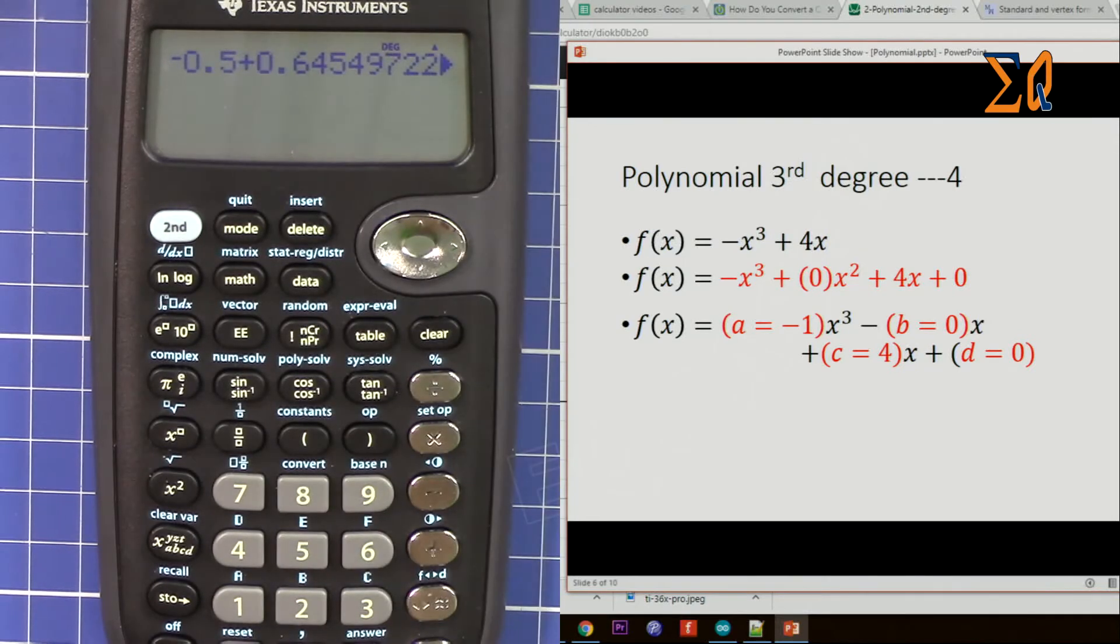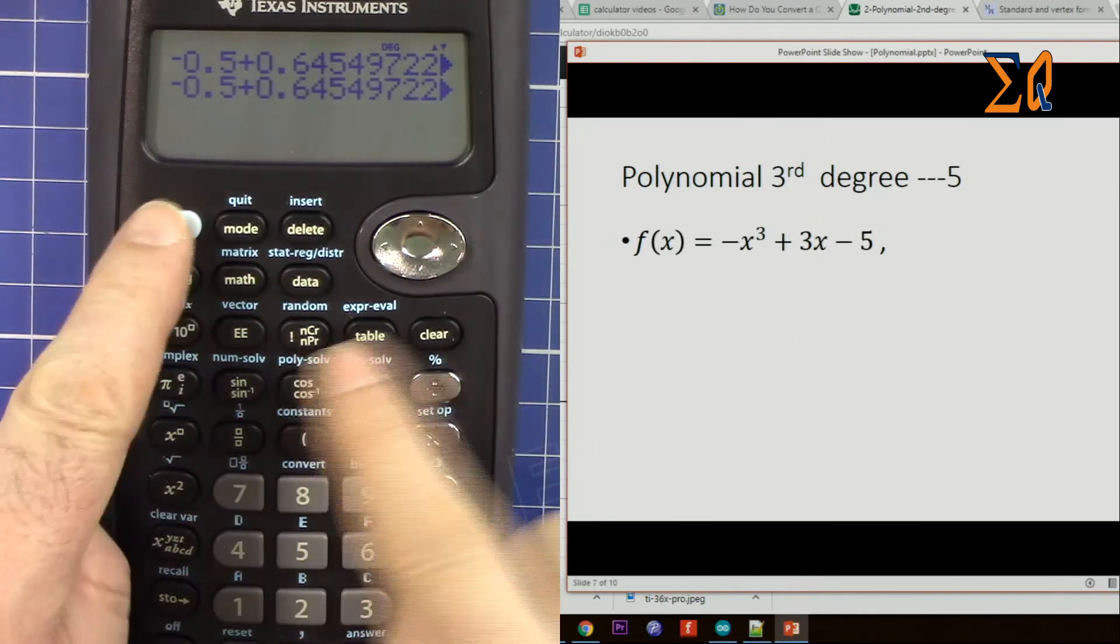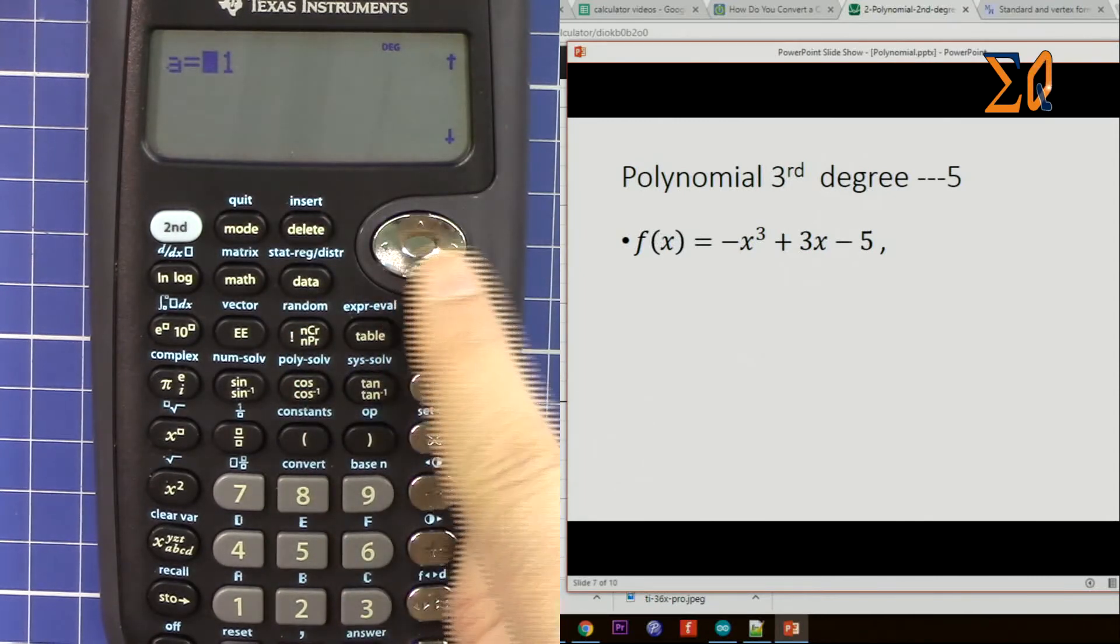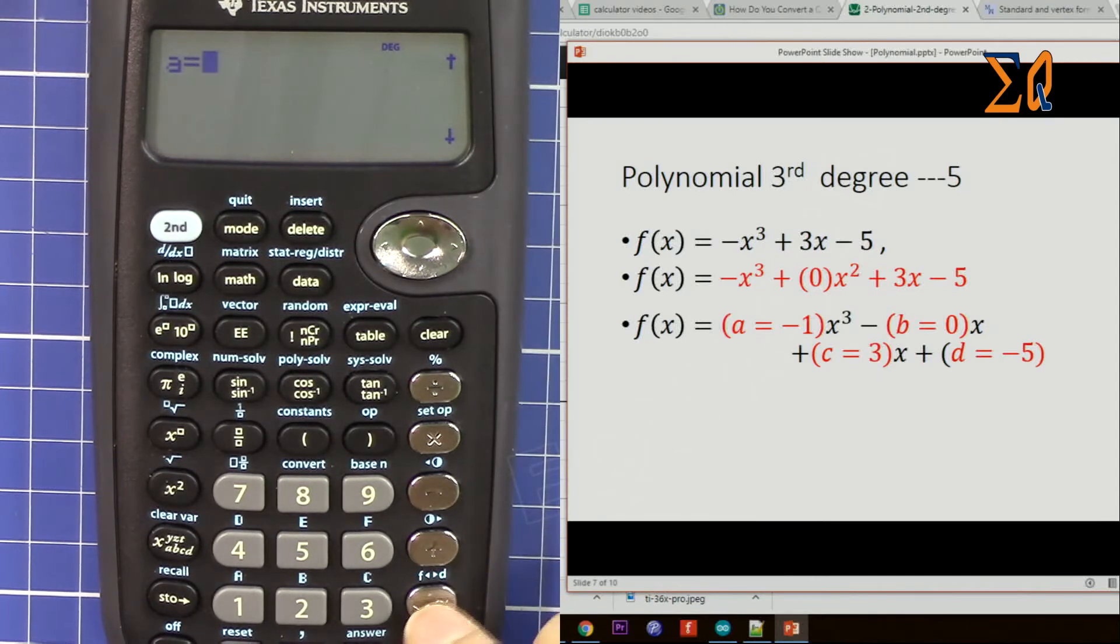So now let's do another equation. So I'm pressing 2, this time for the third degree. Plus, clear. My values are -1, b is 0.